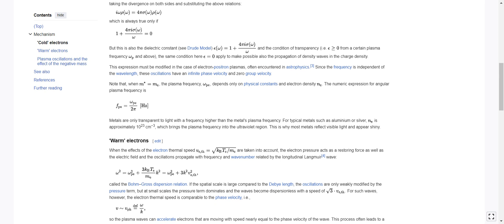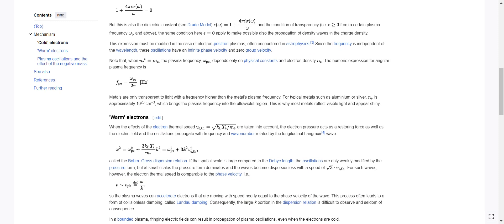This expression must be modified in the case of electron-positron plasmas, often encountered in astrophysics. Since the frequency is independent of the wavelength, these oscillations have an infinite phase velocity and zero group velocity.